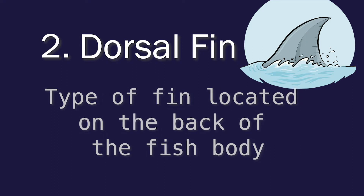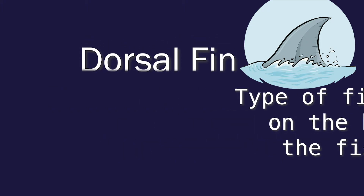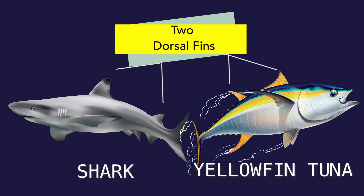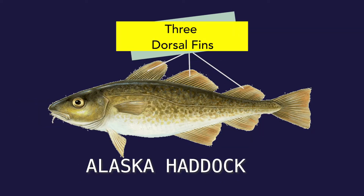The second terminology is the dorsal fin. This is the type of fin located on the back of the fish's body. Most fish possess only one dorsal fin, but in certain species, more than one or two are present. For example, sharks and yellowfin tuna have two dorsal fins, while haddock have three.